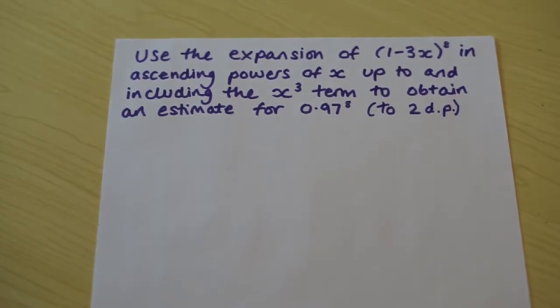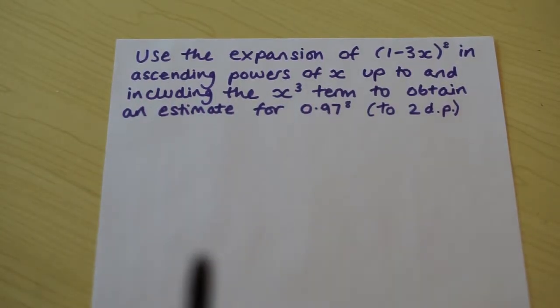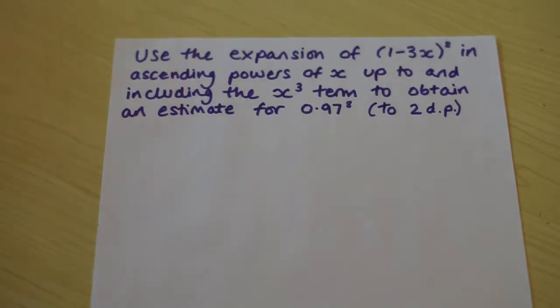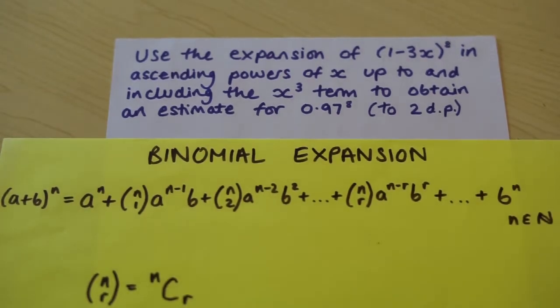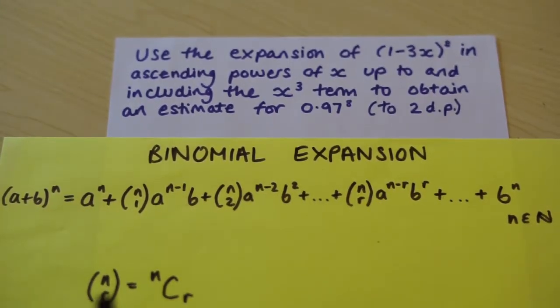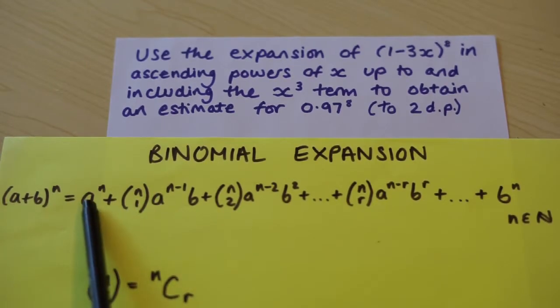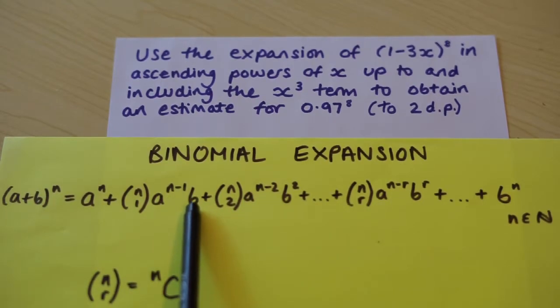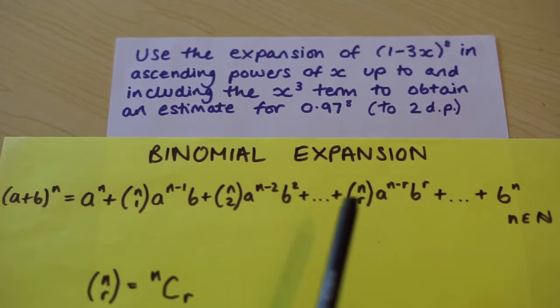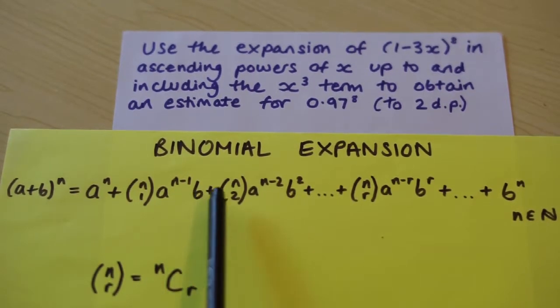Okay, so within the question it talks about expanding the bracket in ascending powers of x. Let me just clarify that. So the binomial expansion is that, and we can see the a term starts with the high power of n and descends, and the b term starts from 1 to 2 and it ascends. So basically we want to make sure our x term is the b term so it ascends.